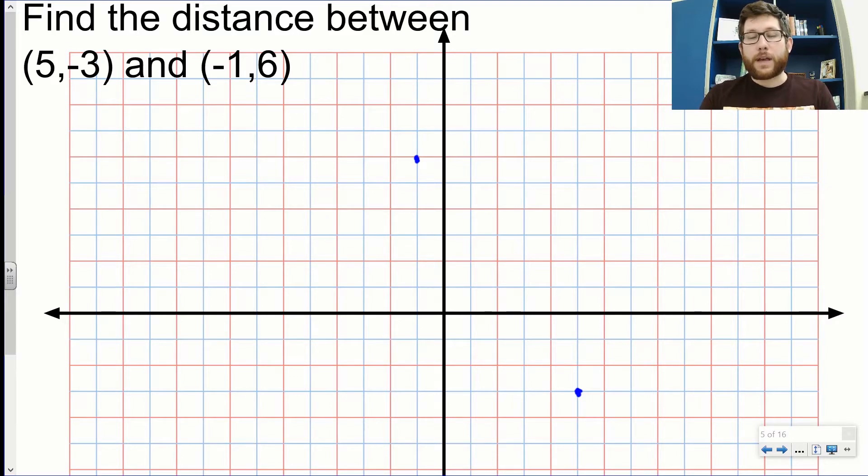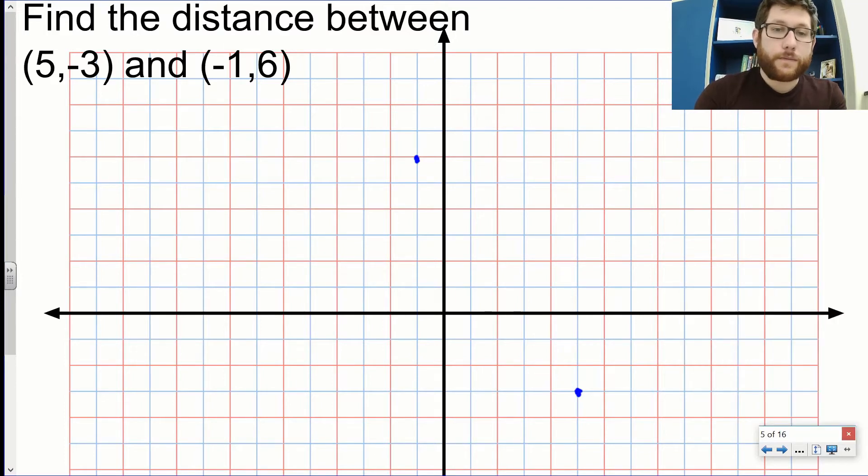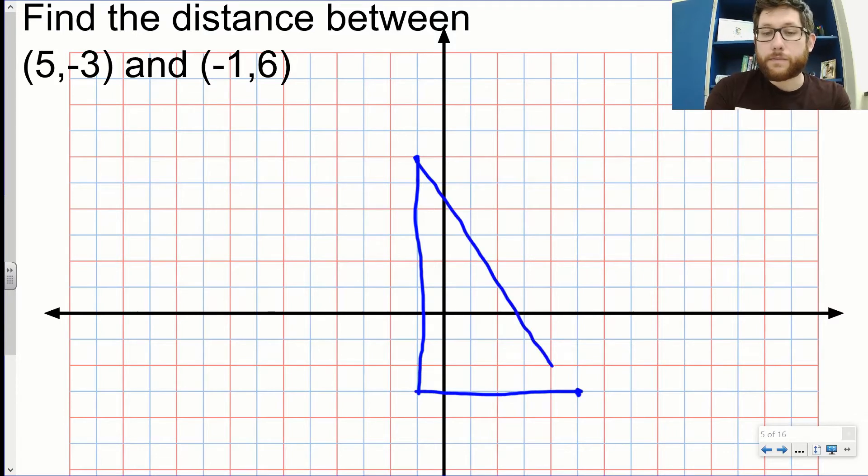We're pretty good at figuring things out if we think in terms of horizontal and vertical. I'm going to draw a vertical line and a horizontal line. I'm going to think about this as a right triangle. Now let's count up these boxes. That's 9 boxes on the side and 6 on the bottom.